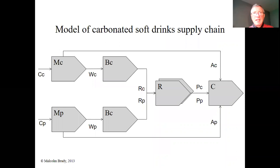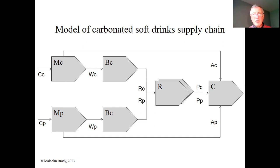We looked at the value chain for the single firm, but obviously each firm's suppliers will have their own value chain, and its buyers — be they wholesalers, retailers, or customers — will also have their own value chain. So each of those semi-rectangular boxes with a triangle at the end represents the value chain for the relevant firm. This is a model of the supply chain where we're looking at the value chains for all firms in the entire industry put together.